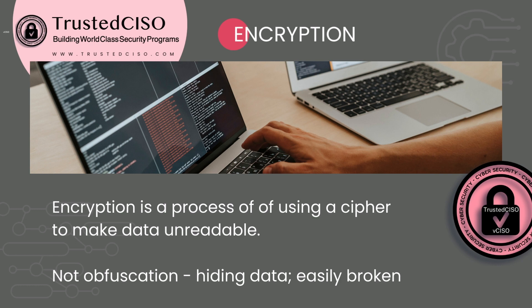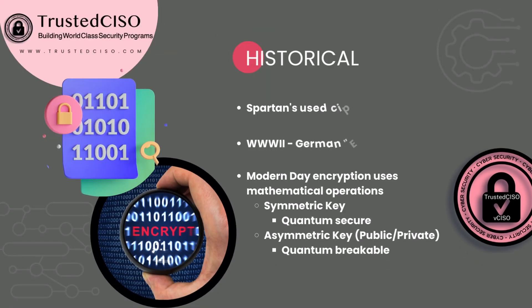Just hiding data without proper encryption is called obfuscation. Historically, encryption has been around for thousands of years. The first known encryption was done by the Spartans, who used a specific cipher to send military messages so that if they were intercepted, the enemy wouldn't understand them.